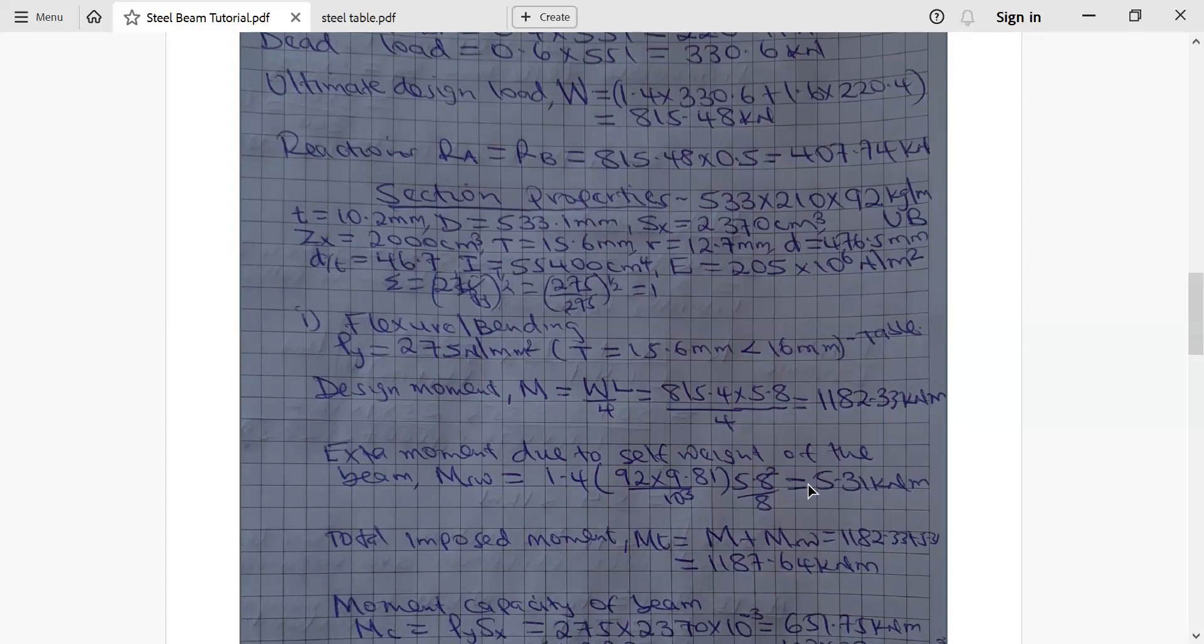But you will find a question that will require you to also compute the self-weight of the beam. Now how do you compute self-weight of the beam? You compute it by taking self-weight is equivalent to 1.4 which is a factor for dead load times this 92 here. Looking at the beam is 533 times 210 times 92 kilogram per meter. Now the last, the third value of a beam of a section is mass per meter in terms of kilogram. That is why and we know that for you to get weight you take mass times gravity. So gravity is 9.81. Now we divide by 10 power 3 to convert it from newton per meter to kilonewton per meter and then you multiply by 5.8 squared over 8. 5.8 is L. Remember for a UDL, we know that moment is WL squared over 8. So all these 1.4 into bracket 92 times 9.81 over 10 power 3 is W. Then L is 5.8. So it's WL squared over 8.